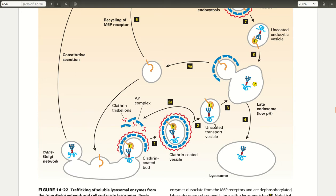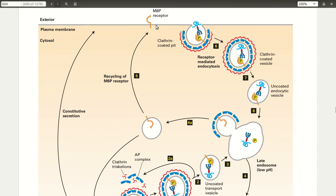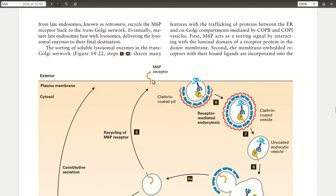The uncoated vesicle makes its way to the late endosome where it fuses, and here we have a lower pH which will favor the dissociation of the lysosomal enzyme and its receptor. The receptor is reused again through a retrograde movement back to the trans Golgi network, or it could also go to the plasma membrane.